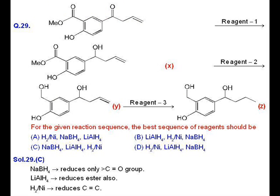Question number 29 is based on selectivity of reducing agents. In step 1, when reagent 1 is used, only the carbonyl group is reduced. That is possible by using NaBH4, which protects or does not affect the C double bond O group of ester or the C double bond C group.